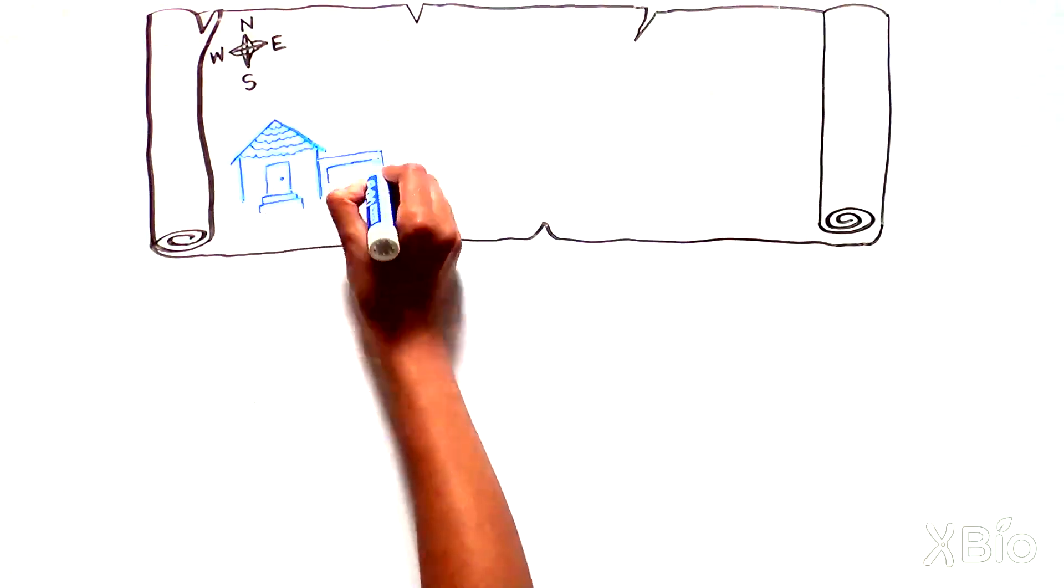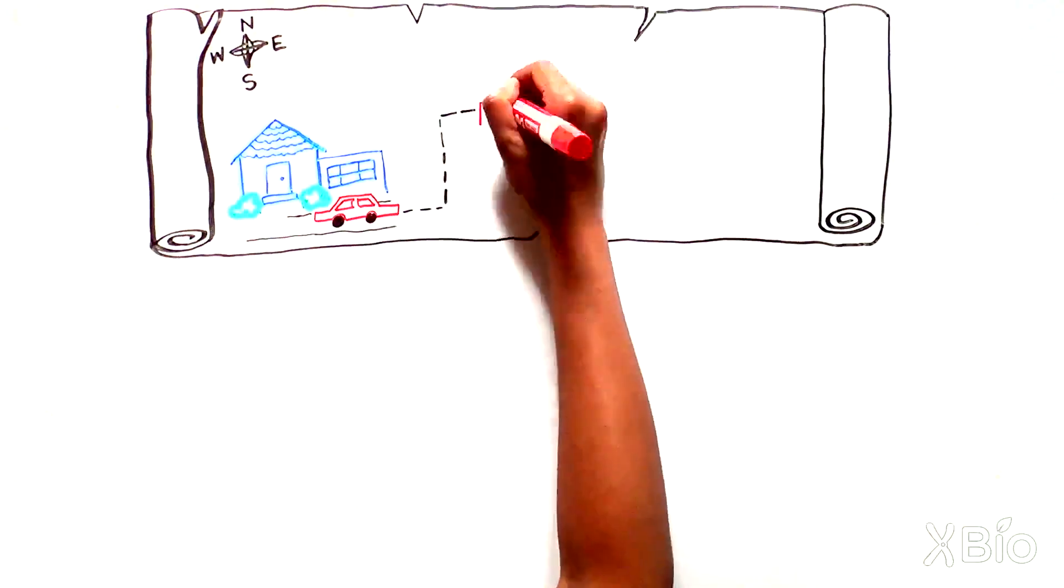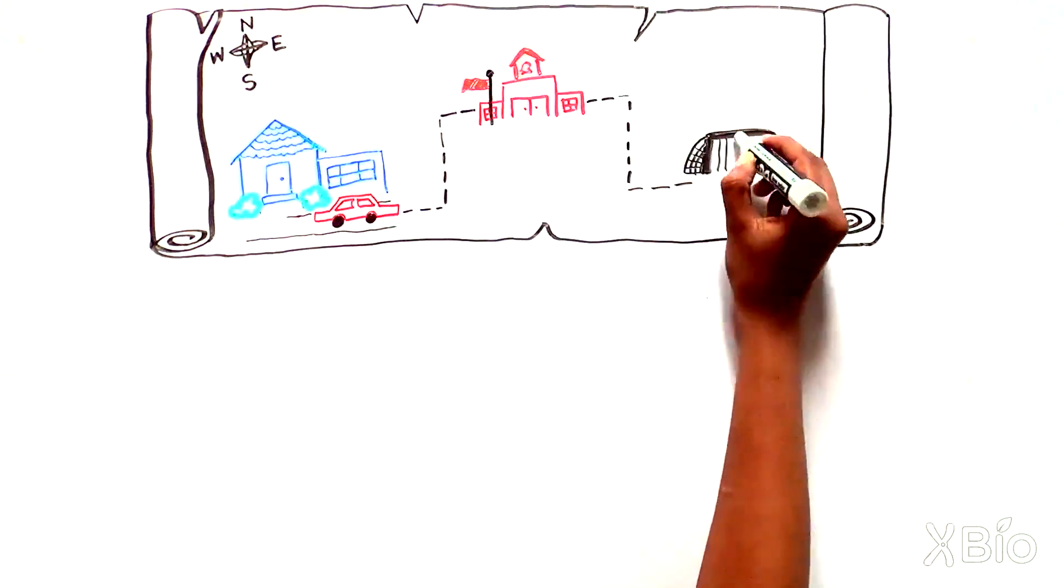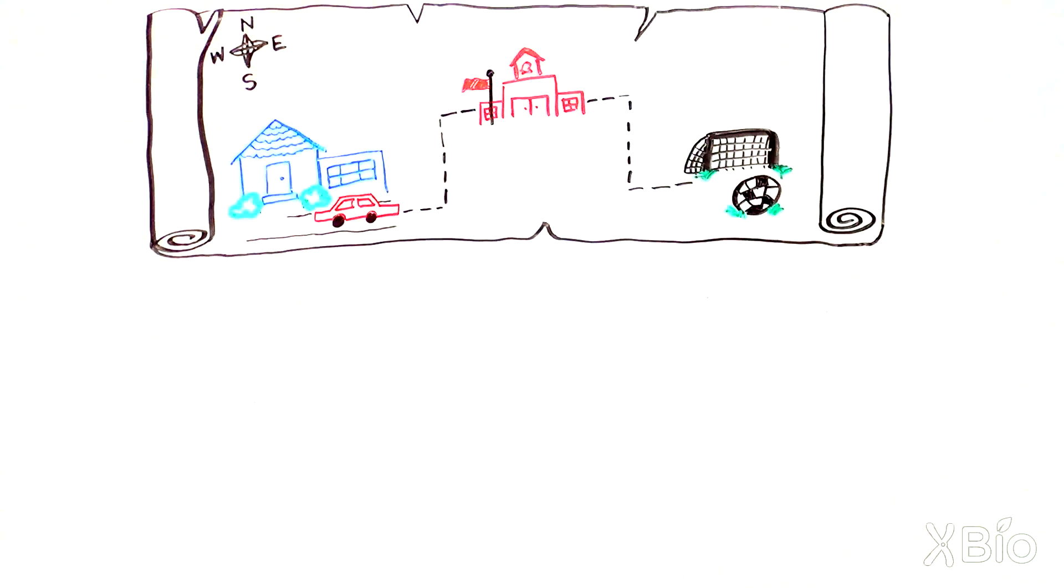We use maps every day to figure out how to walk from home to school and then from school to soccer practice. Scientists also use maps to navigate through the enormous amount of DNA in a cell.